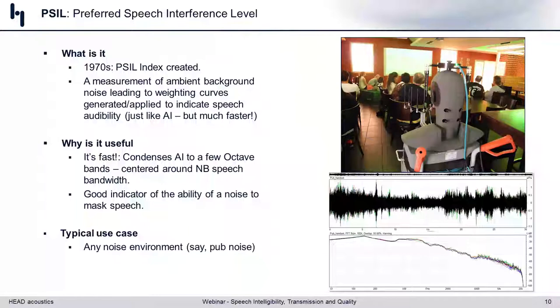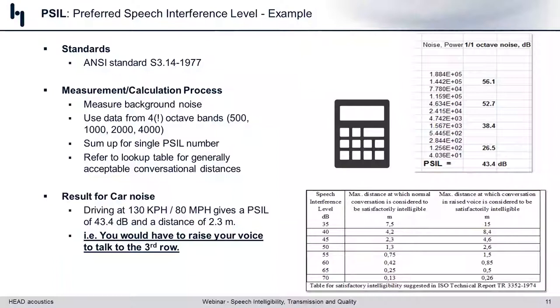Just like AI, PSIL can be used for any type of noise environment, but this time we don't even compare to any form of speech — we just look at the noise signature. For reference material you can look up ANSI S3.14. The process: first measure your background noise, and in our spreadsheet on the right-hand side you can see the four octave bands that we sum up for a single PSIL number.